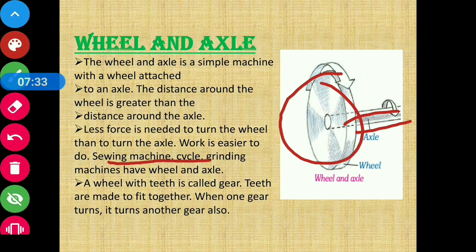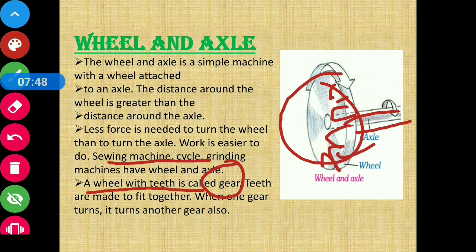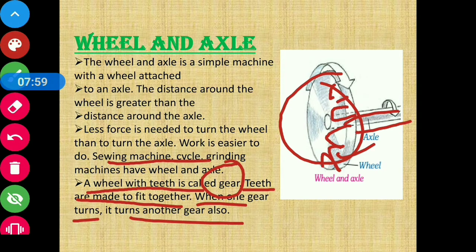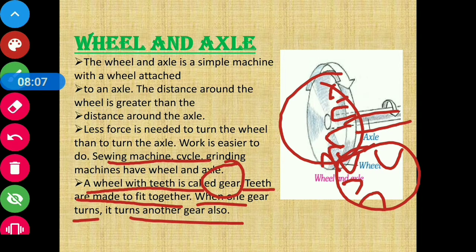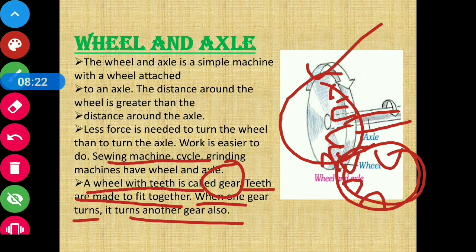In some wheels, teeth-like structures are present. A wheel with teeth is called a gear. These teeth are made to fit together — when one gear turns, it turns another gear also. The two wheels are fitted together, and if we turn one wheel, it automatically turns the other wheel as well. This is how wheel and axle works.